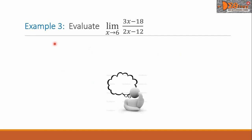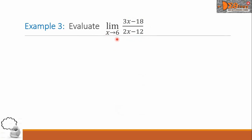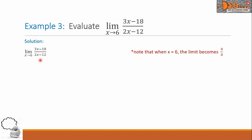Example 3: evaluate the limit of the function 3x minus 18, all over 2x minus 12, as x approaches 6. Let us copy this problem. Please note that when we substitute 6 to the x in this function, the answer will give us 0 over 0, and that is again an indeterminate form.